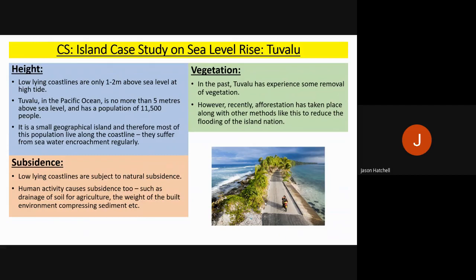In terms of vegetation, in the past Tuvalu experienced removal of vegetation for farming and agriculture. More recently, afforestation has started to take place, as seen in the image below, to try and reduce flooding of the island nation so that the trees can absorb excess water and reduce flooding.